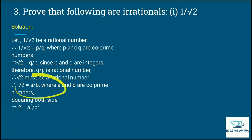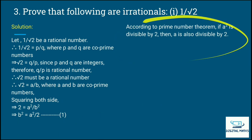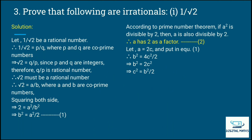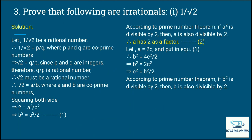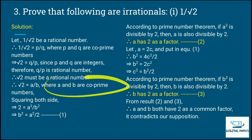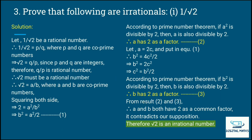Squaring both sides: 2 equals a squared upon b squared, so b squared equals a squared upon 2 — result 1. If a squared is divisible by 2, then a is also divisible by 2 according to the prime number theorem. So a has 2 as a common factor. Substituting a equals 2c into equation 1: b squared equals 4c squared upon 2, so b squared equals 2c squared, and c squared equals b squared upon 2. Therefore b is also divisible by 2 — b has 2 as a common factor. Both a and b have common factor 2, contradicting that they are co-prime. So root 2 is an irrational number, and therefore 1 upon root 2 is also an irrational number.